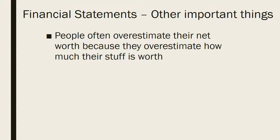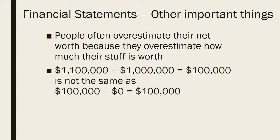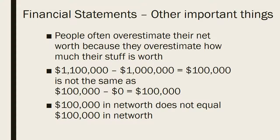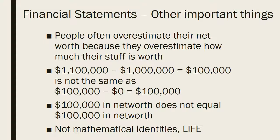Another concept to recognize with net worth: just because two individuals have the same net worth doesn't mean the backstory is the same. Take two people — one has $1.1 million in assets and $1 million in liabilities, so net worth is $100,000. Is that the same as someone who has $100,000 in assets and $0 in liabilities? Their net worth is also $100,000, so the situation looks the same — but these are two very different situations. One person is extremely leveraged with lots of debt, and the other has no leverage at all. Life is more complex than these mathematical identities.